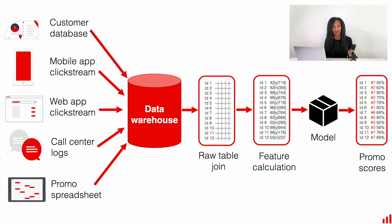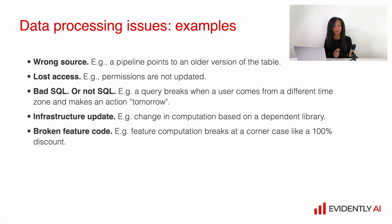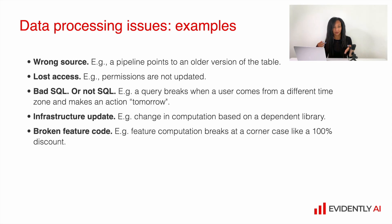It sounds like a lot of steps, and because there are a lot of steps, you can have some issues on each and every step. So let's discuss what can go wrong with such models. You know the golden rule – garbage in, garbage out. This is why it's very important to make sure that there is no wrong data we feed to our model. In case you have a lot of steps in your pipeline, there are quite a lot of things which can go wrong. For example, you can have the wrong data source problem, some lost access, wrong SQL or non-SQL query, some infrastructure update which prevents you from getting the right data, or even broken feature code.